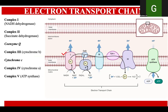If you look at complex number one, NADH dehydrogenase, this complex is extracting the electrons from the high-energy molecule NADH, and it is oxidized into NAD+. On the other hand, complex number two is extracting the electrons from the high-energy molecule FADH2, and this molecule is oxidized into FAD.